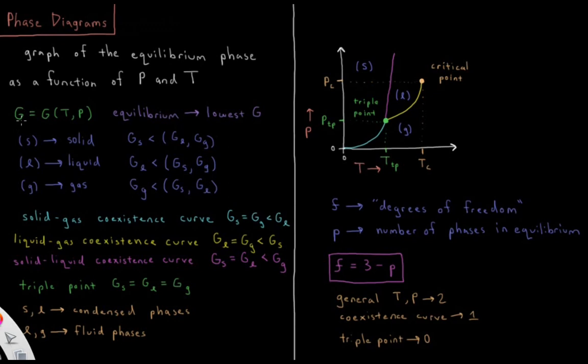The Gibbs energy is a function of temperature and pressure, and the equilibrium phase at a given temperature and pressure is going to be the phase with the lowest Gibbs energy.